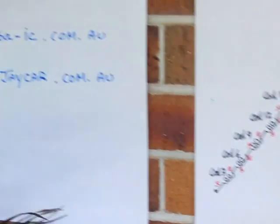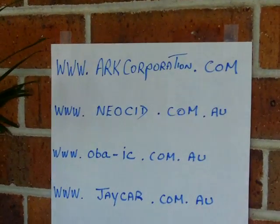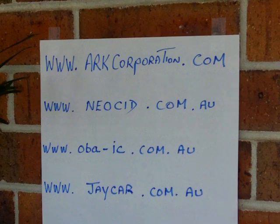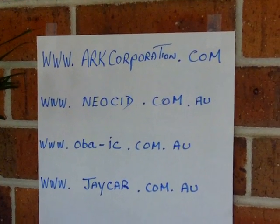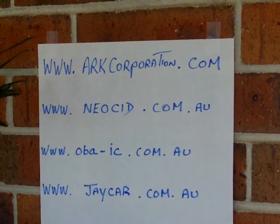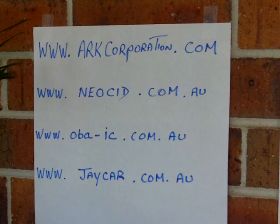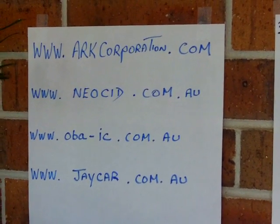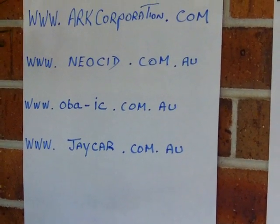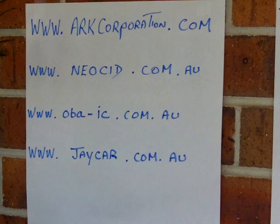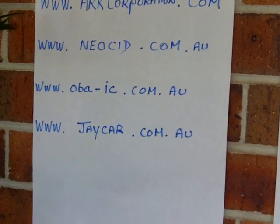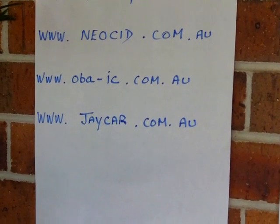Just to consolidate where we are getting the parts. ARK Corporation supplies the wheel hub auto parts around the world. Neo SID is the rare earth permanent magnets. The OBA-IC is for the magnet wire and JCAR for the electronic catalog.